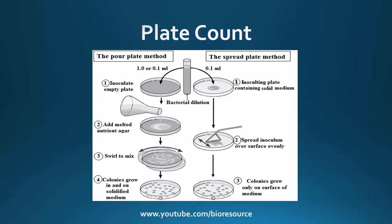The number of colonies that are formed on the plate is counted. Based upon the dilution, the number of colony forming units in the original sample can be calculated. In this case, only the viable bacterial cells are counted.